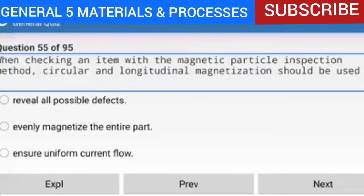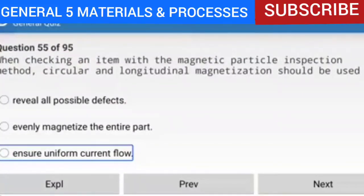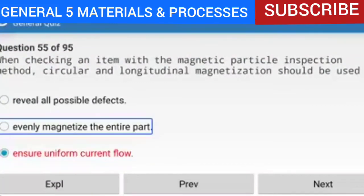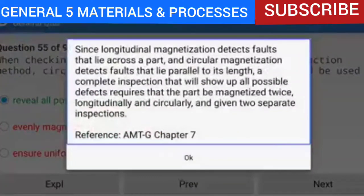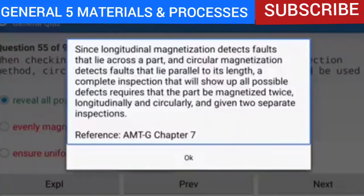Question 55 of 95: When checking an item with the magnetic particle inspection method, circular and longitudinal magnetization should be used to reveal all possible defects. Longitudinal magnetization detects faults that lie across a part, and circular magnetization detects faults that lie parallel to its length. A complete inspection requires that the part be magnetized twice — longitudinally and circularly — and given two separate inspections. Reference: AMTG Chapter 7.